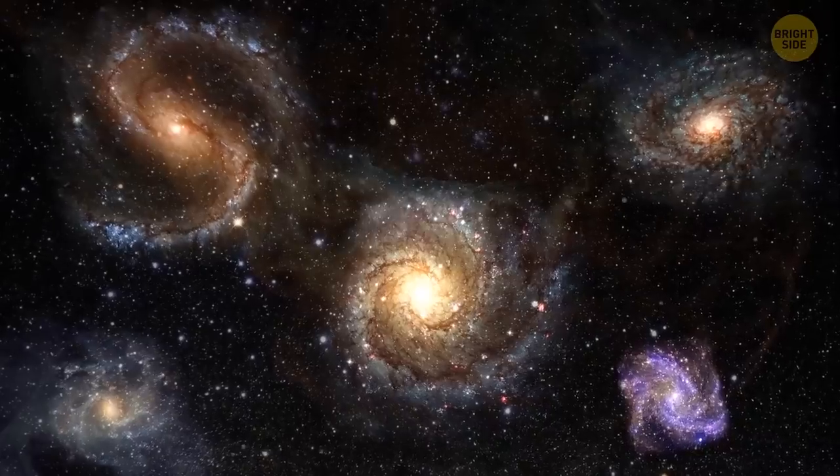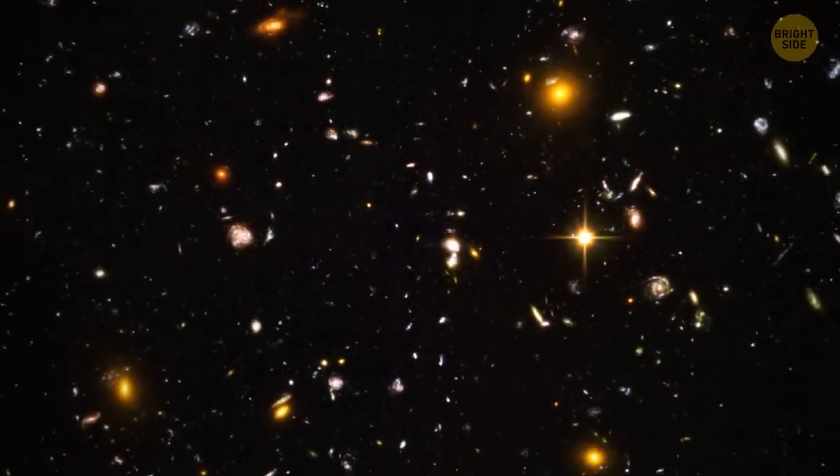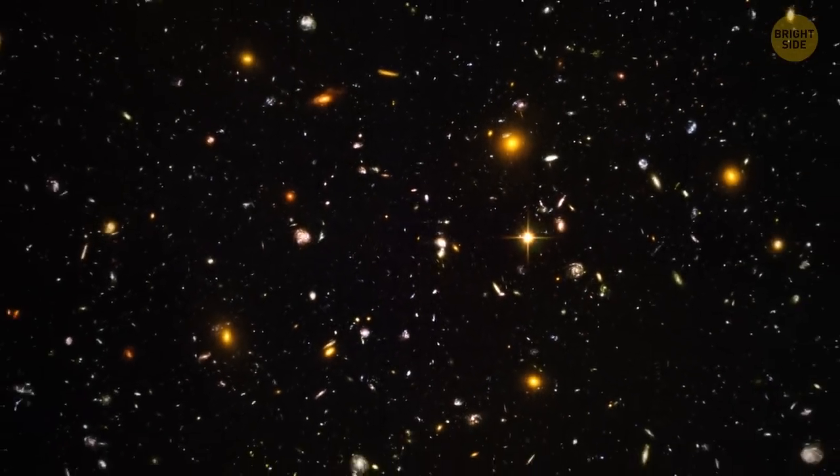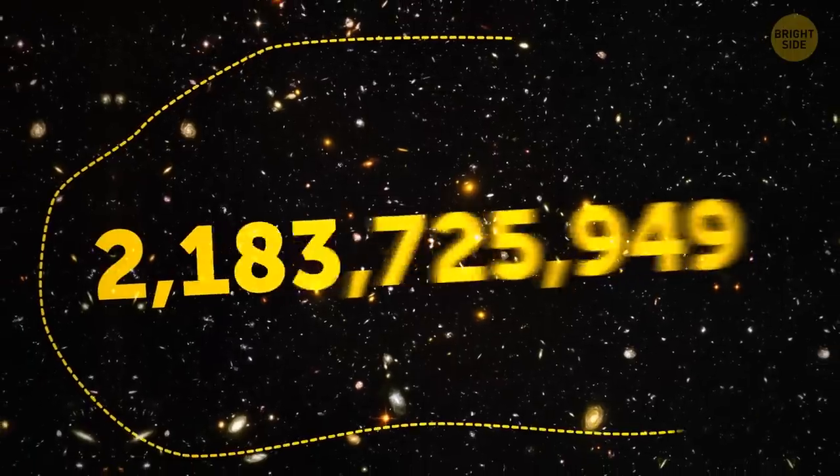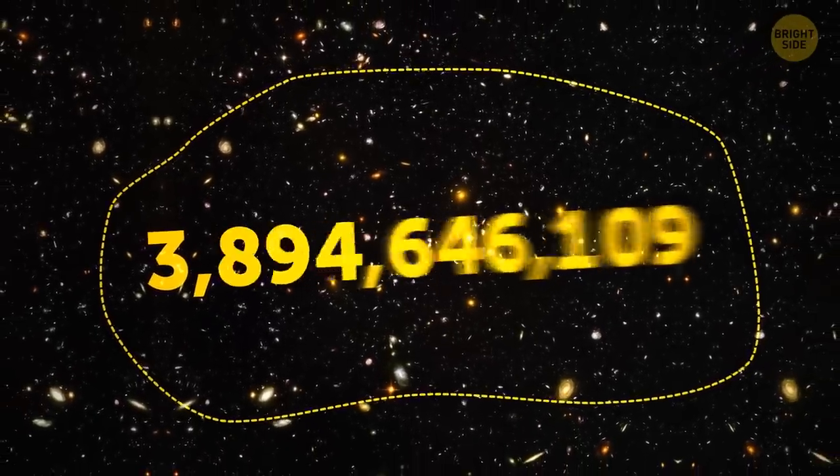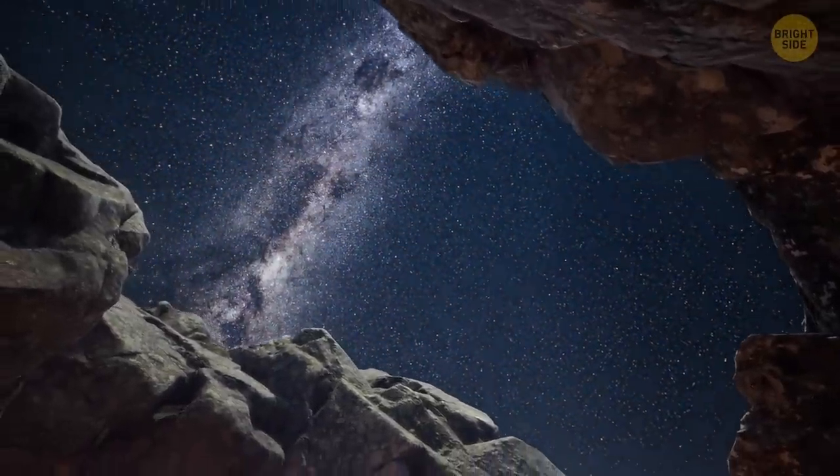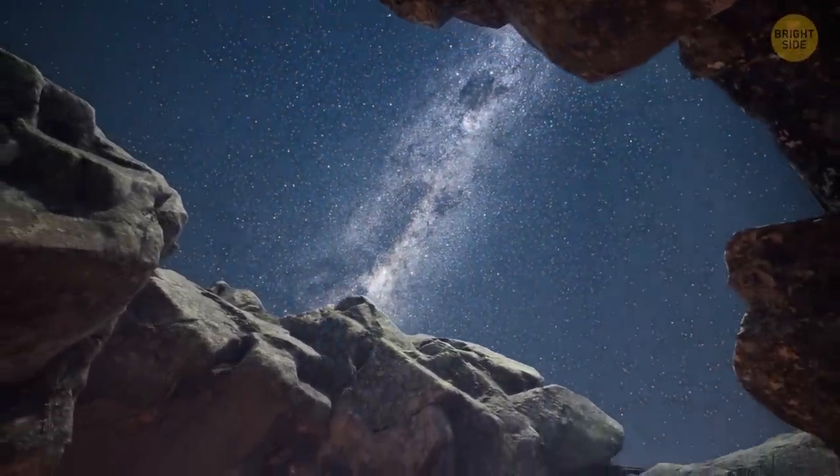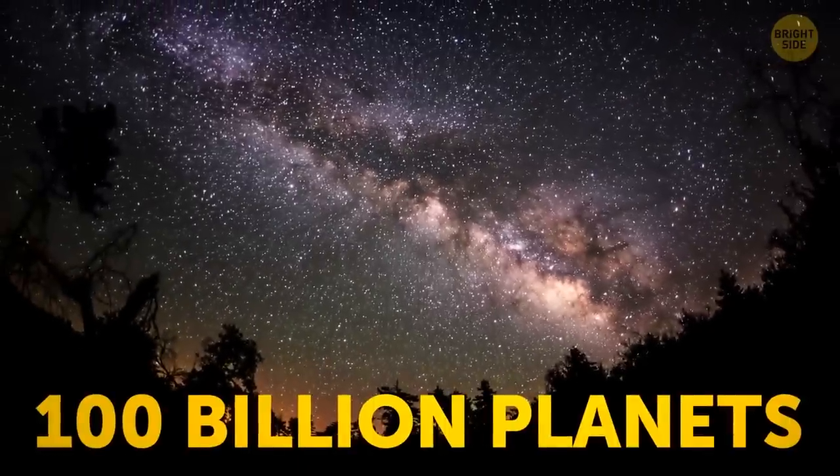Scientists believe that there are at least a couple of billion galaxies out there. We don't know the real number, and probably never will, but they tried to calculate it by counting how many galaxies we can see in a pretty small and restricted area of the sky. It may seem as if the universe was filled with stars and a couple of planets here and there, but our home galaxy has at least 100 billion planets.